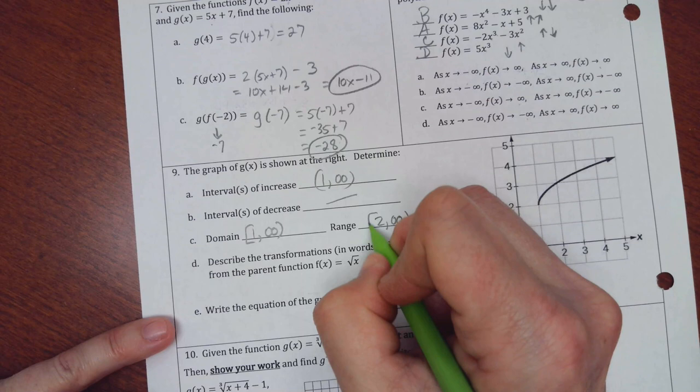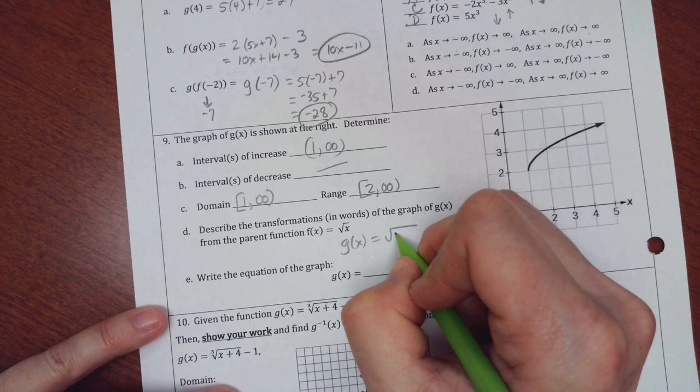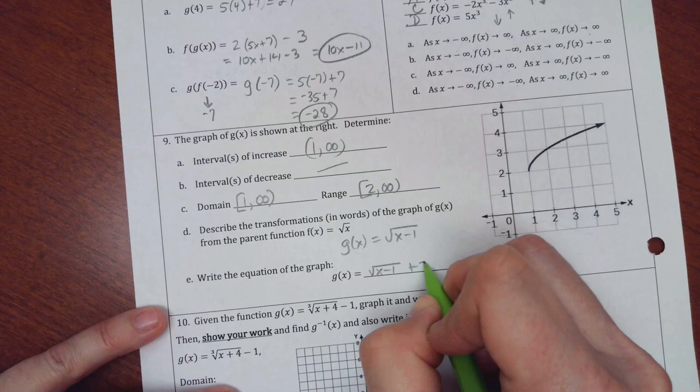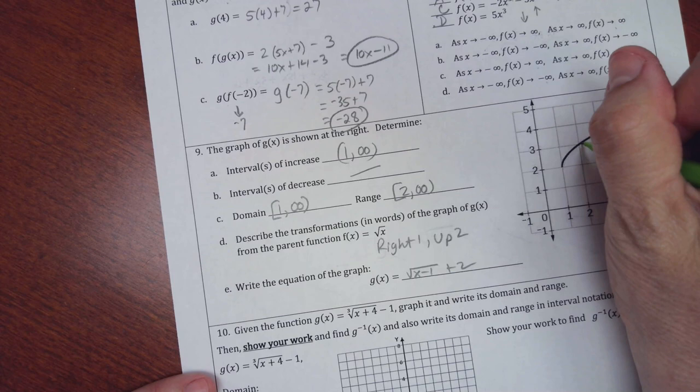Now a normal square root function would start in the middle. This one's been moved right one and up two. So this one's called g of x. So to move it right one, I do x minus one. So x minus one plus two. And I'm supposed to say the words here. Right one up two. And I just noticed the same. One one. Two four. So it hasn't been a stretch or shrink or anything like that.